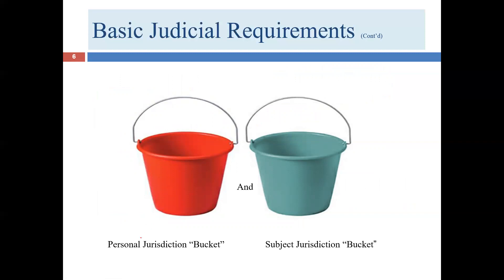Here's how I like to think about it: we need to have personal jurisdiction — think of it like a bucket full of water — and we also need subject matter jurisdiction. Jurisdiction works like an on-off switch: you can't have just a little bit of subject matter or personal jurisdiction. Either the bucket is full to the top or it's completely empty. For a court to act, it must have both personal jurisdiction over the defendant and subject matter jurisdiction over the dispute. If it just has one, it can't hear the case.